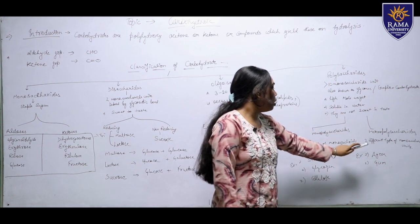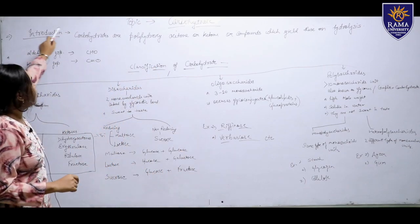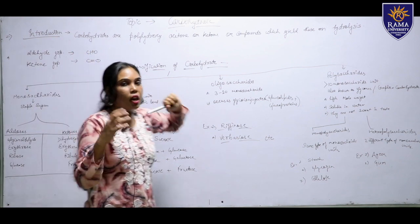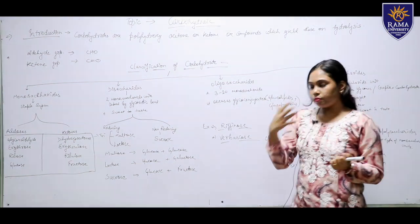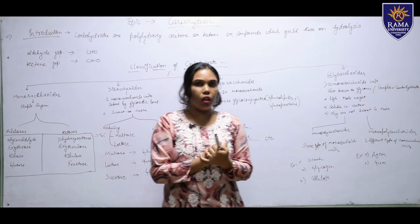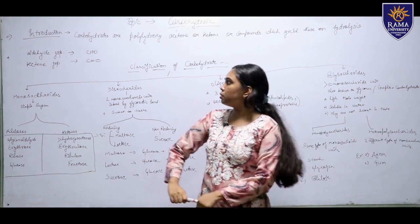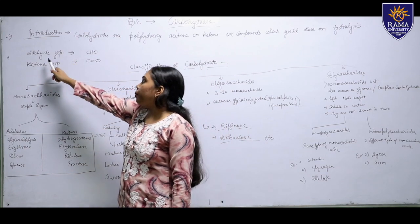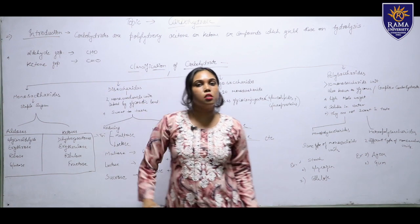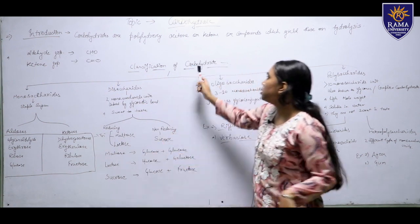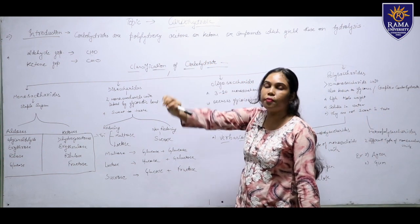Quick revision: Carbohydrates are polyhydroxy aldehydes and ketones, or compounds which yield these on hydrolysis. They are stored in our body as energy, and excess carbohydrate is stored as fat. The aldehyde group is denoted by CHO and the ketone group is denoted by C double bond O. Carbohydrates are classified into four groups: monosaccharide, disaccharide, oligosaccharide, and polysaccharide.